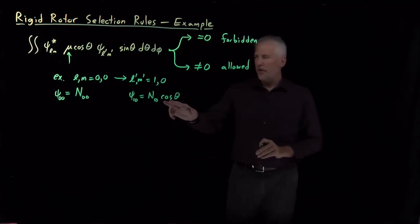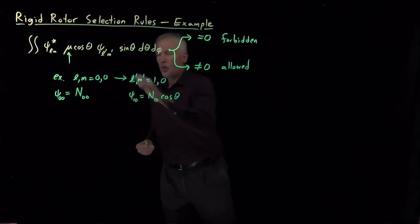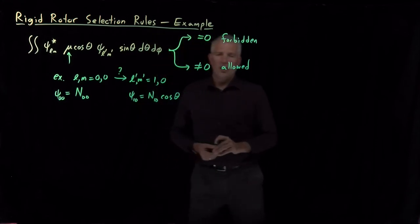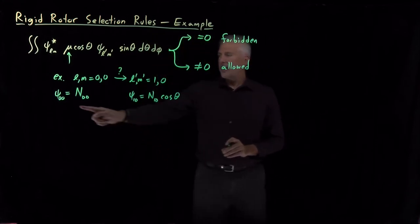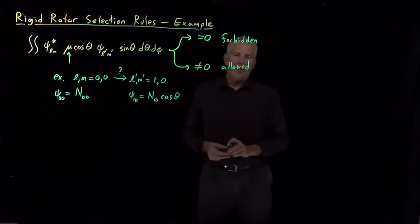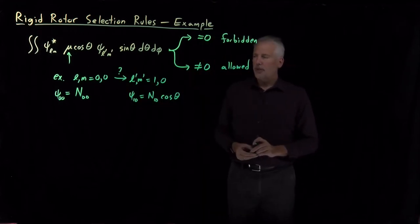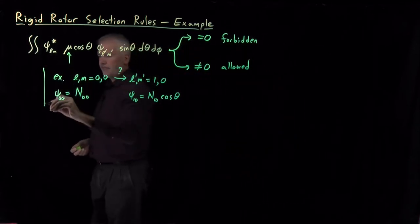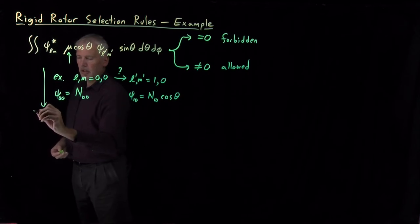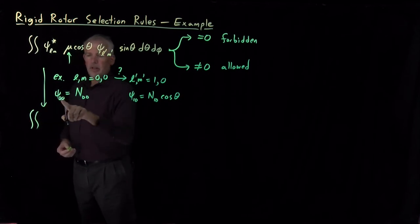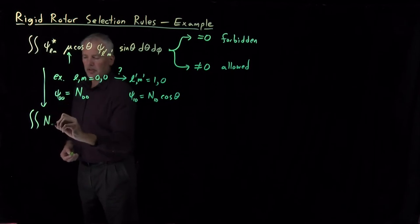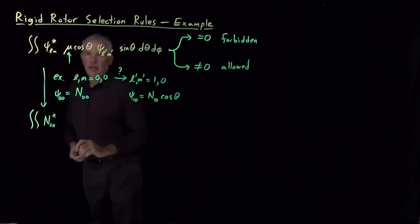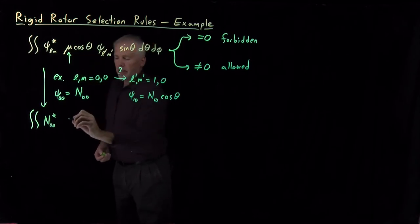So those are the rigid rotor wave functions. So in order to determine whether this transition is allowed or forbidden, we just need to take these wave functions and insert them into the transition dipole moment expression and determine whether that integral comes out to be zero or non-zero. So if we do that, this transition dipole moment integral looks like a double integral. The initial wave function, psi zero-zero, is just this constant. The dipole moment, mu times cosine theta, the dipole moment in the z direction.